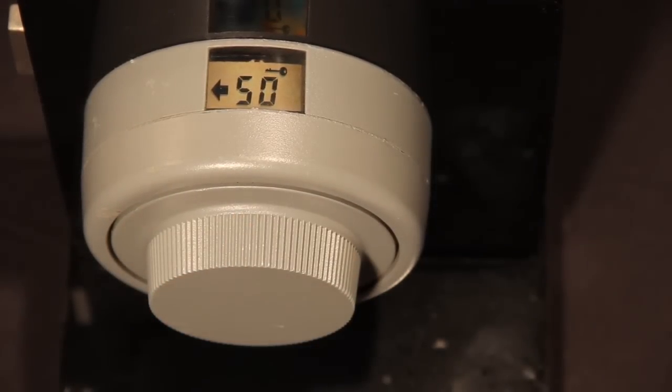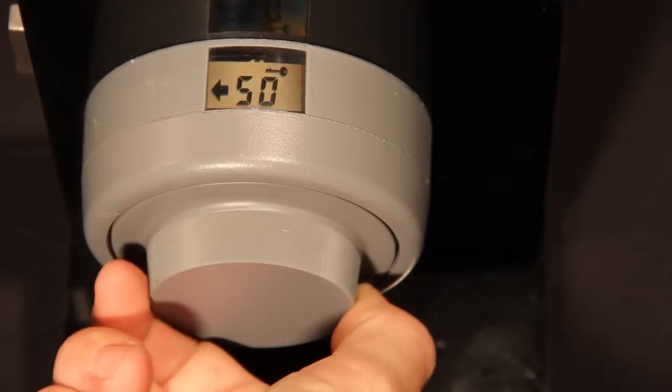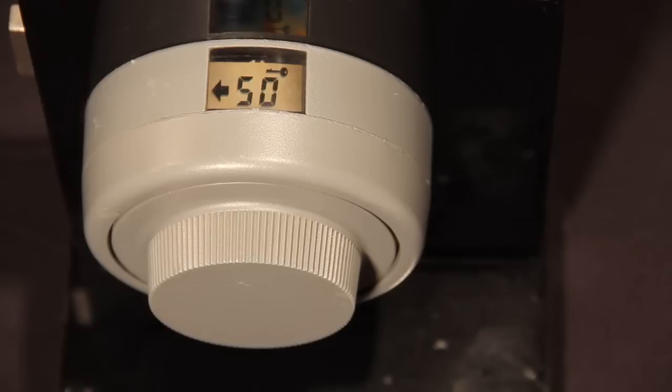Once the new combination has been entered, dial right until the new combination begins to flash. On your X-09 lock, the new combination you entered will flash twice. After the combination flashes, you will notice the letters PO, Papa Oscar, will appear on the viewing screen.